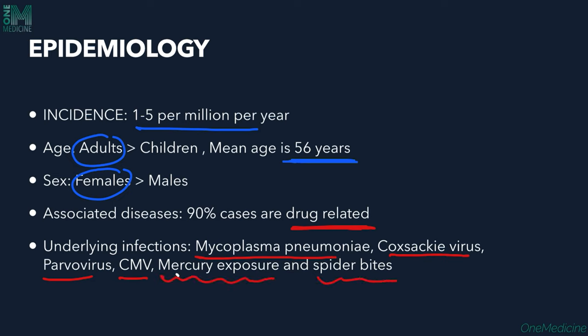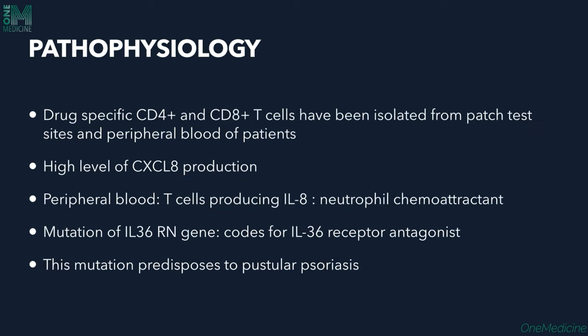Other triggers include mercury exposure and spider bites, which can cause AGEP-like reactions. In the pathophysiology, drug-specific CD4+ and CD8+ T cells have been identified from the site of lesion as well as from peripheral blood. There are high levels of CXCL8 (IL-8), a neutrophil chemoattractant, identified from the lesions, explaining neutrophilic infiltrates in lesions and neutrophilia in the blood.